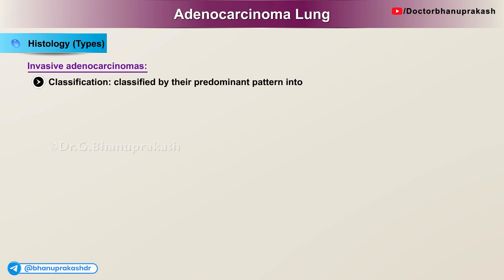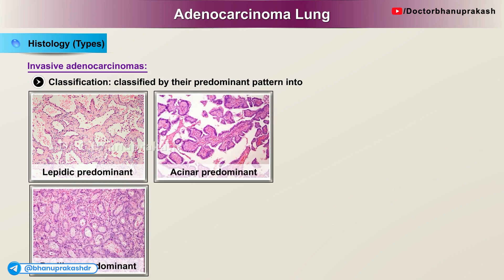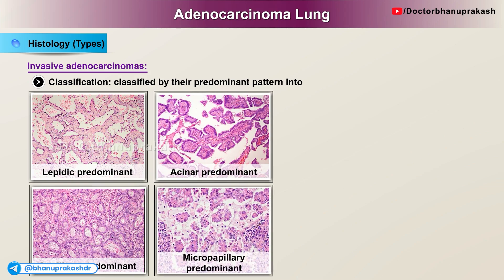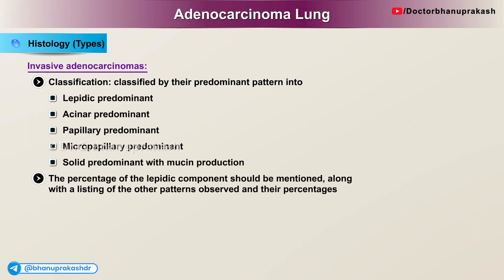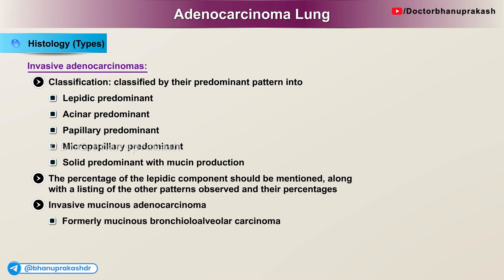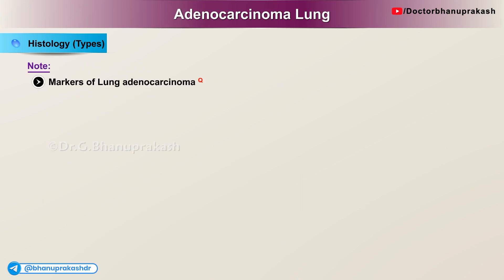Invasive adenocarcinomas are classified by their predominant pattern into: lepidic predominant, acinar predominant, papillary predominant, micropapillary predominant, and solid predominant with mucin production. The percentage of the lepidic component should be mentioned along with the other patterns observed and their percentages. Invasive mucinous adenocarcinoma, formerly known as mucinous bronchioloalveolar carcinoma, spreads aerogenously and forms satellite tumors, which may present with lobar pneumonia-like consolidation. Lung adenocarcinoma markers include thyroid transcription factor 1 (TTF-1) and Napsin A.